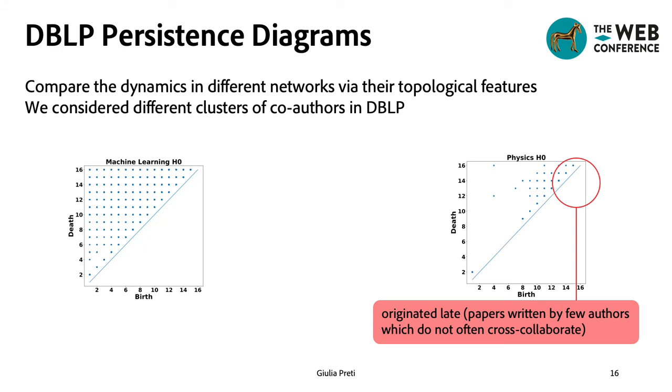On the other hand, the fact that most of the points in the physics diagram are located in the upper right corner indicates that physics researchers tend to collaborate only in small groups and that they do not often cross-collaborate.